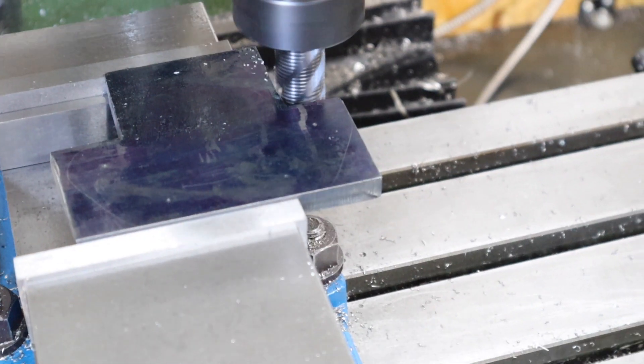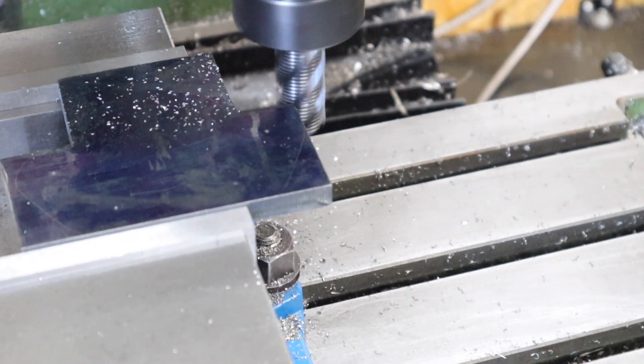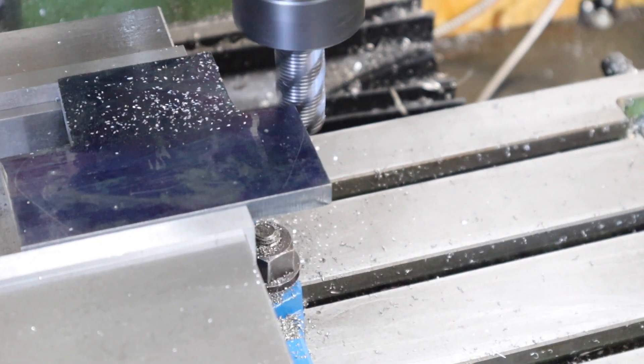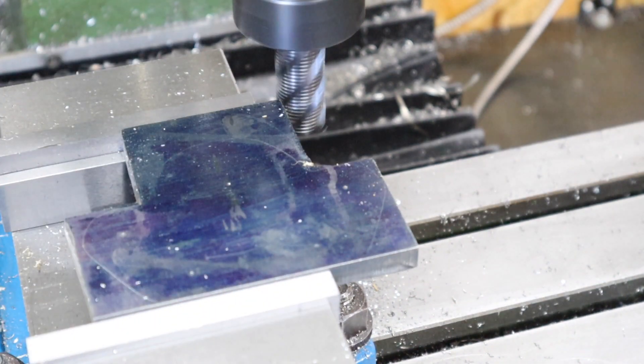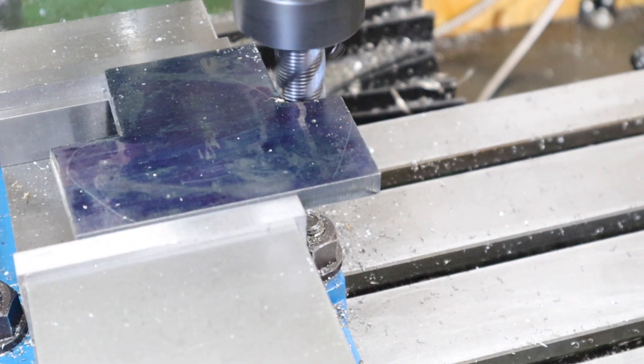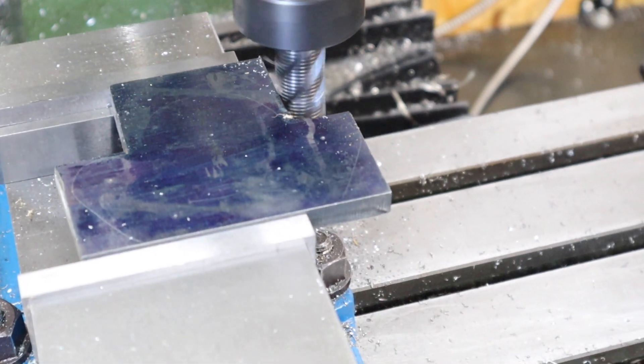With that bottom part done it's now time to machine these side bits down to the scribe lines that we marked out. This was a fairly simple process of just working down until I got fairly close to those scribe lines.